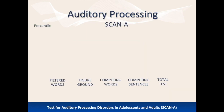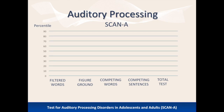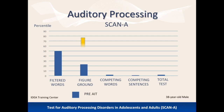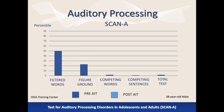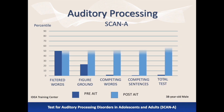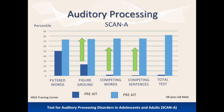The Test of Auditory Processing Disorders in Adolescents and Adults measures processing abilities that are important for successful communication. Auditory processing difficulties are evaluated with four different tasks on this test. A 38-year-old man participated in Berard AIT because he had significant auditory processing problems. The scores nine months after the Berard training indicate he is processing well above the average range, and this improvement was also reflected in his ability to easily carry on a fluent conversation.